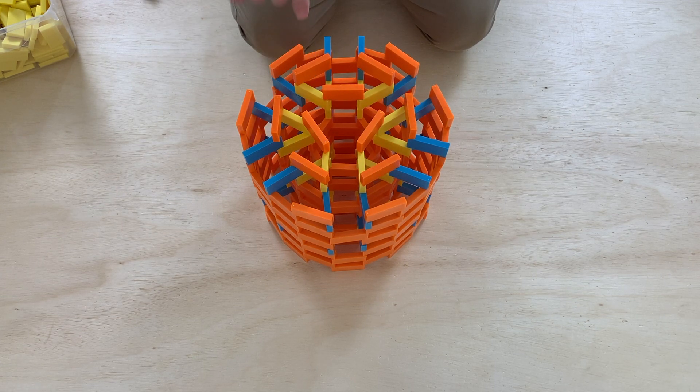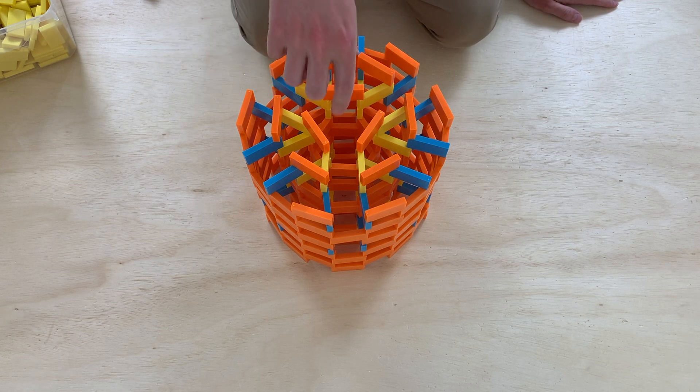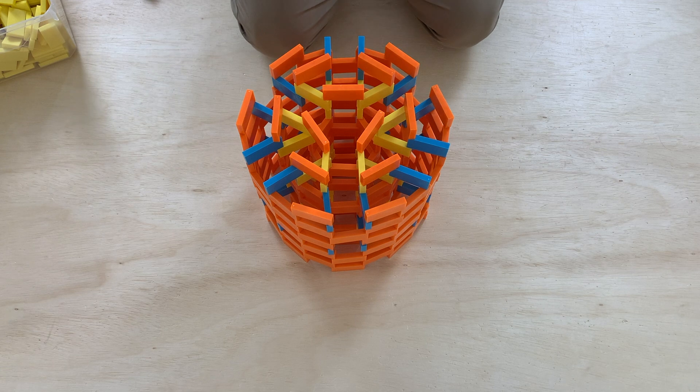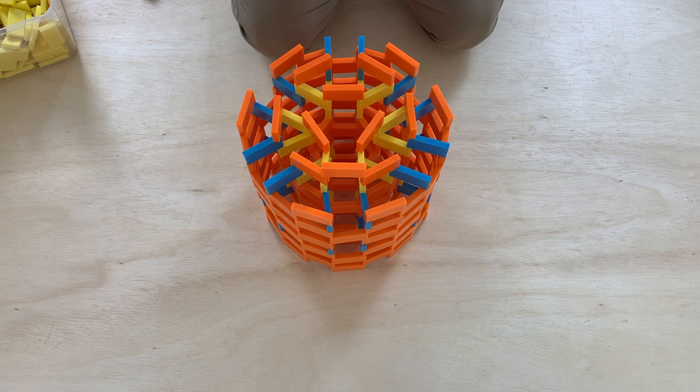If you don't have these two circles in this relationship to each other then things aren't going to line up right and you're not going to be able to build it. Let's go ahead and put in the next two levels of orange.